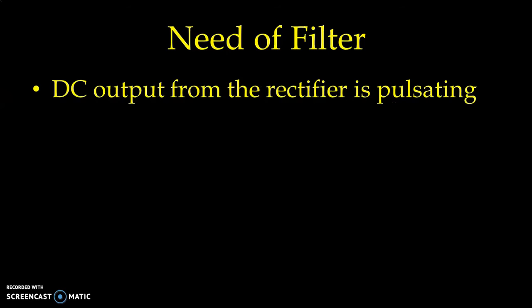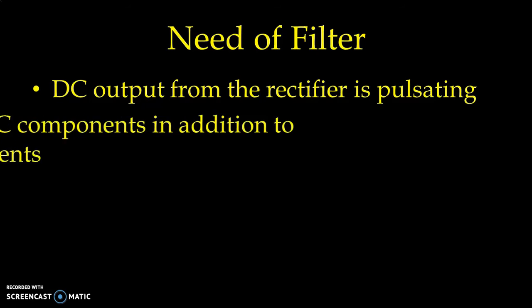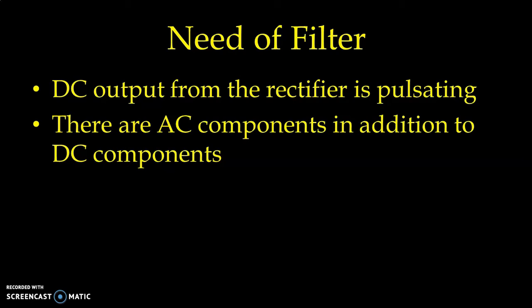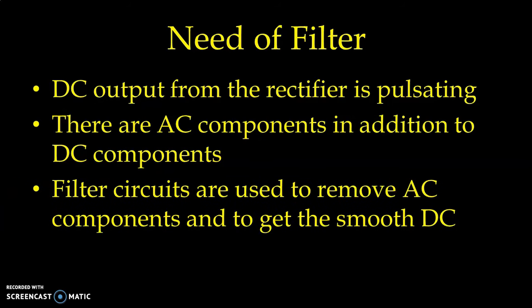First let us understand the need of the filter circuit. Normally we use a filter circuit with the rectifier. The output of the rectifier is not pure or smooth DC but is pulsating in nature, meaning there are certain AC components that may be present at the output of the rectifier in addition to the DC component. So we use filter circuits to remove AC components from the output of the rectifier and to get smooth or very close to smooth DC output.